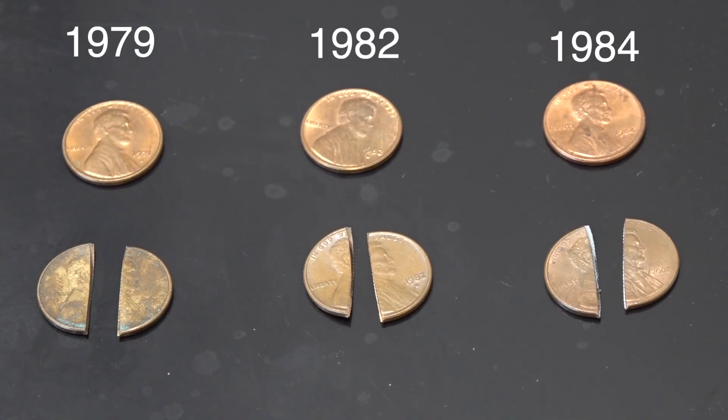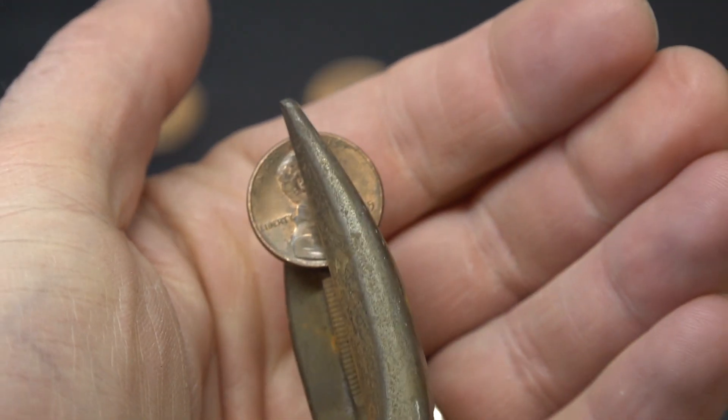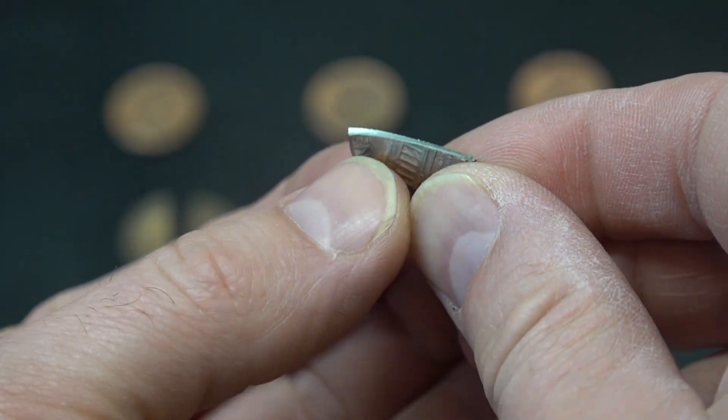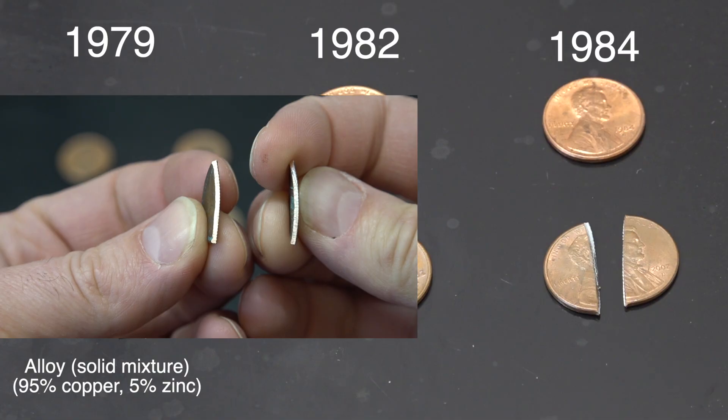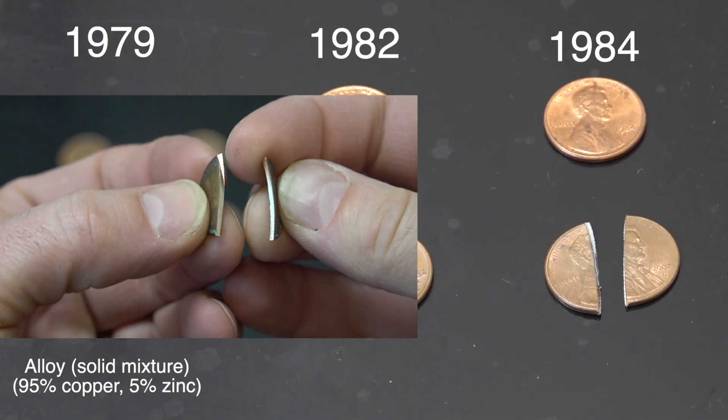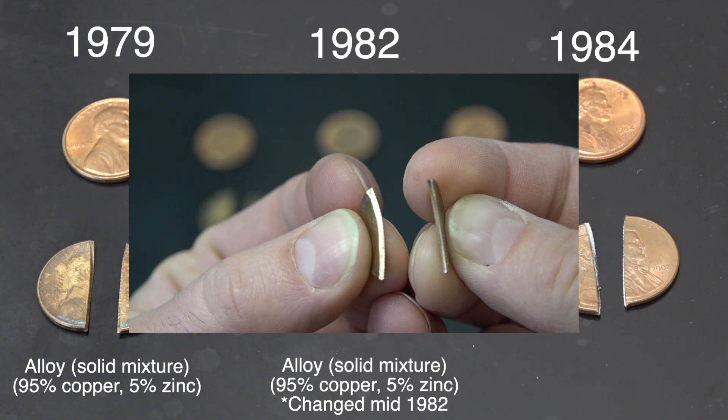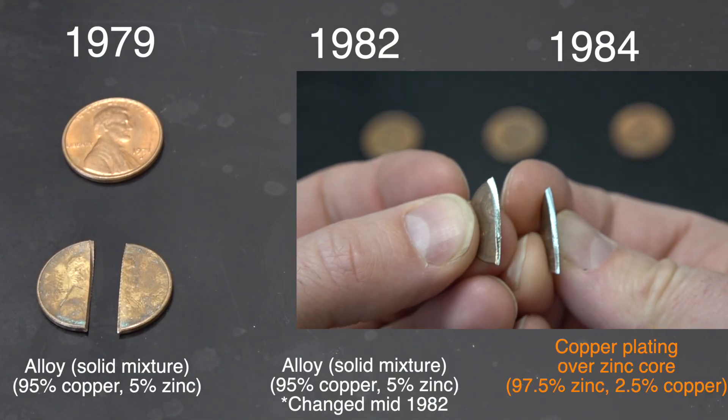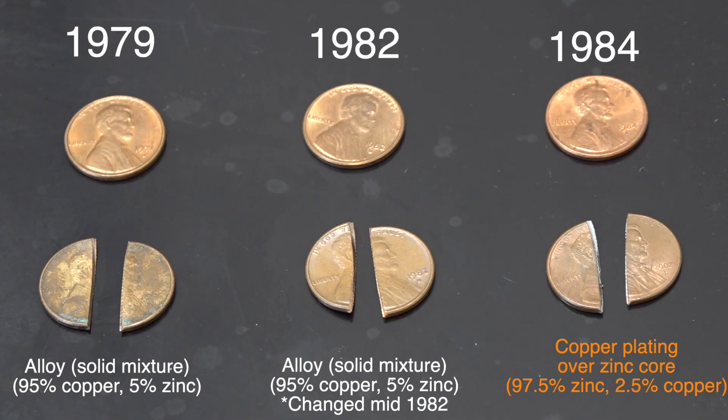It is important to know that not all pennies are created equal. In 1982, there was a big change in the composition of pennies. I'm going to cut them open so you can see the insides of them. But prior to 1982, pennies were mostly copper. In 1982, about halfway through the year, the copper amount was reduced drastically. And after 1982, there just became this thin coating of copper over a core of zinc.